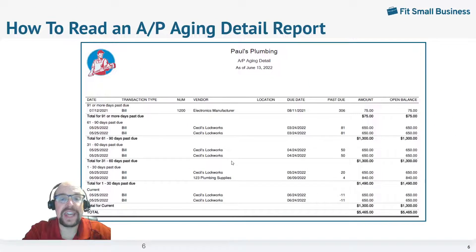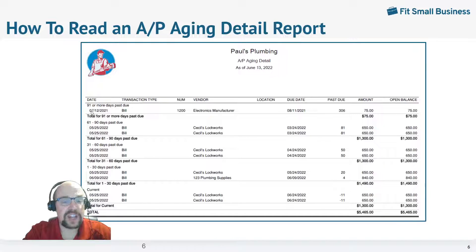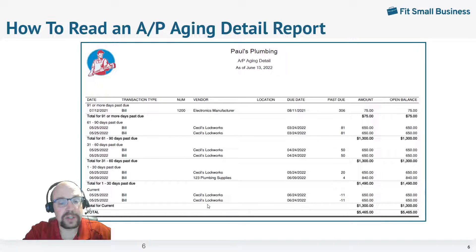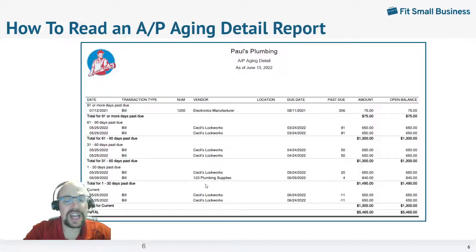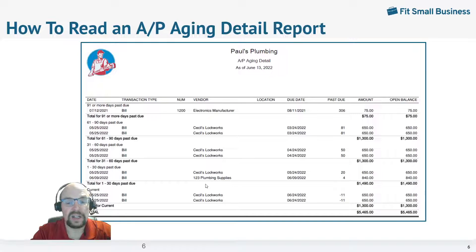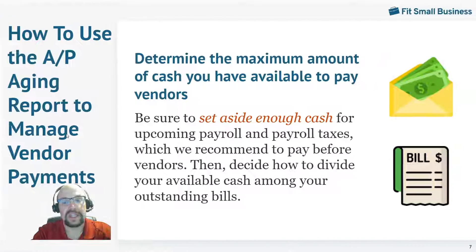The other report available is your AP Aging Detail. This one is listed by bill or invoice rather than by vendor. Here we have our top group — 91 days and older — and that's this particular bill from an electronics manufacturer. Here we see Cecil's Lockworks has about 7 different bills that are late, and this shows each of the bill details. It's up to you whatever you like to work with. I prefer to see how much I owe each vendor individually to determine whether I need to pay money to that vendor this month.